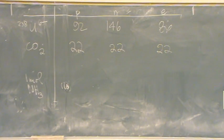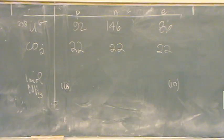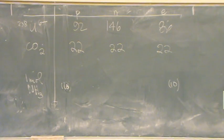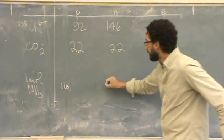How about electrons? Ten — also ten. For neutrons, we need the total mass numbers. For nitrogen, the mass number is 14. For hydrogen, the mass number is 1, but there are no neutrons in hydrogen. So 14 minus 7 gives 7 neutrons for NH₃.